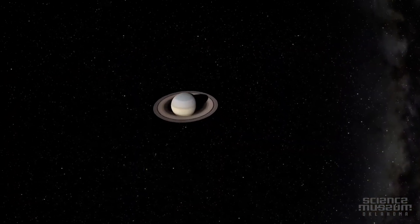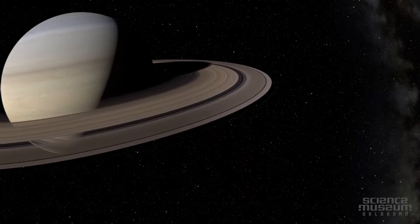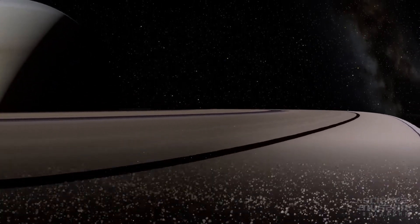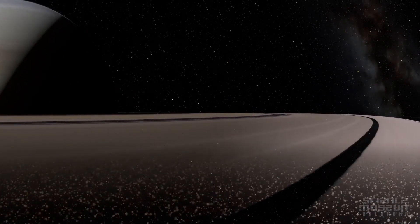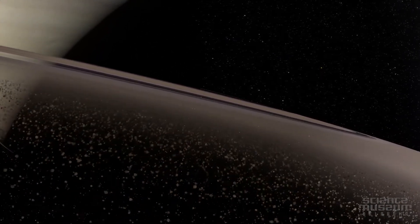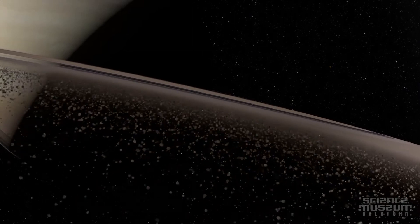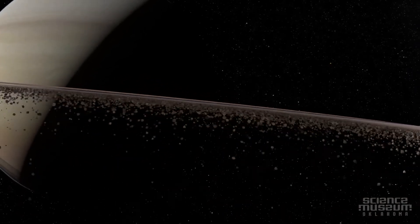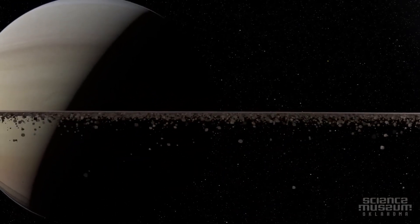The amazing ring world of Saturn now appears. Going in for a closer look at the rings, we can see that they're made of chunks of rock and ice that range in size from less than an inch to several feet across. The results of passing comets, meteors, and the ice geysers of its moon Enceladus.